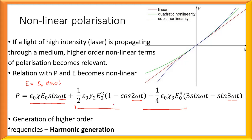This generation of different wavelengths is called harmonic generation. Therefore, the generation of higher-order frequencies is called harmonic generation.